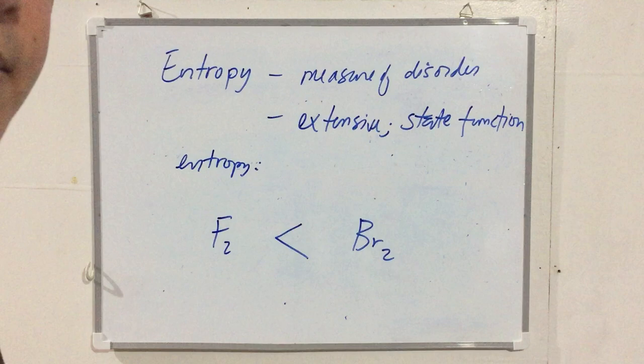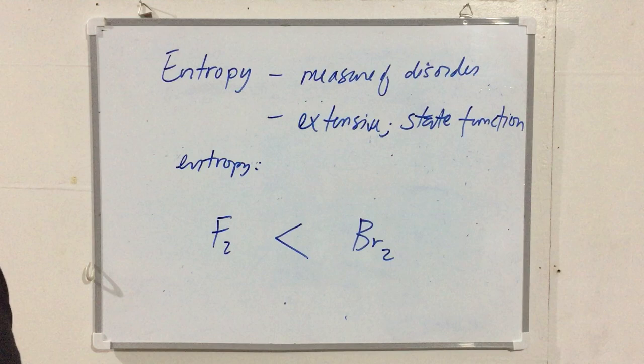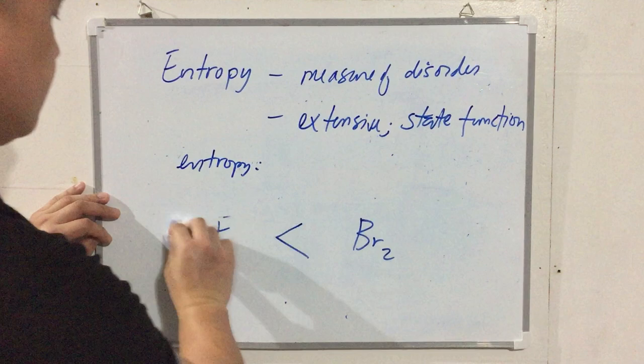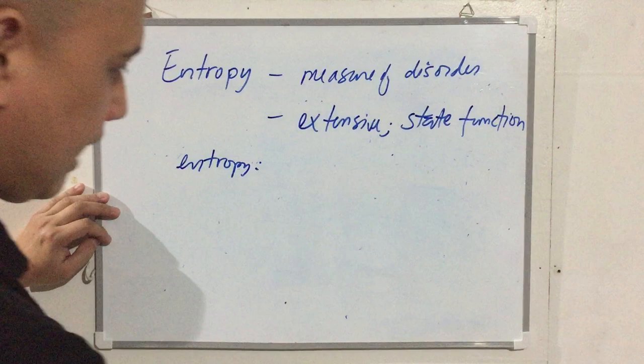If you add plasma, entropy is even higher. On the other extreme, a Bose-Einstein condensate has lower entropy than a normal solid. In terms of chemical reactions, we need to pay closer attention to reactants and products.